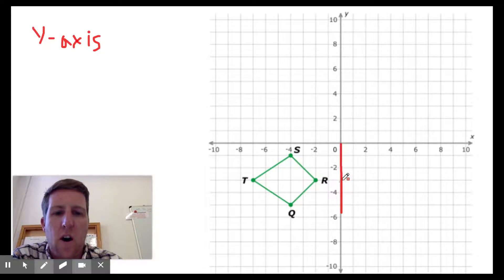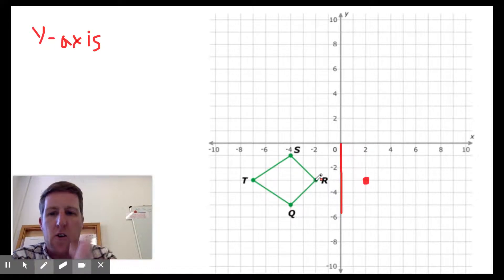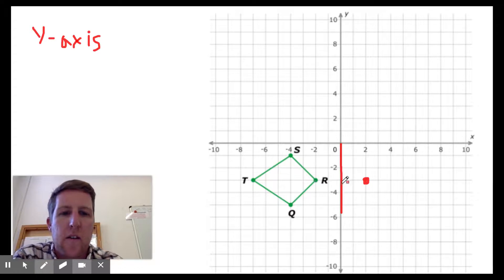So the point r is actually going to be over here, two squares away from the mirror and immediately across from where it would have been on the other side of the mirror. So we'll actually call this one r prime.